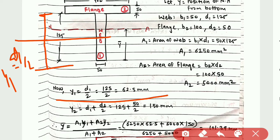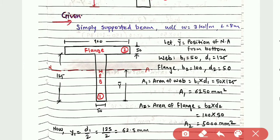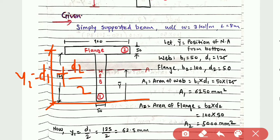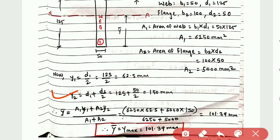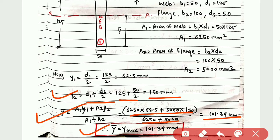Now y2 is the distance from the bottom line to the centroid of the flange. y2 = d1 + d2/2 = 125 + 50/2 = 150 mm. Using the formula ȳ = (A₁y₁ + A₂y₂) / (A₁ + A₂), substituting all values, we get ȳ = 101.39 mm from the bottom.